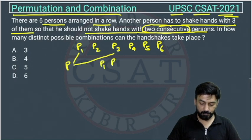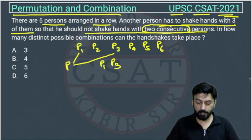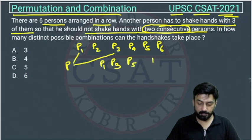So he cannot shake hands with P4. Out of P5 or P6, he can shake hands with anyone. Suppose the first case is P5, and the second case will be P1, P3, and P6.